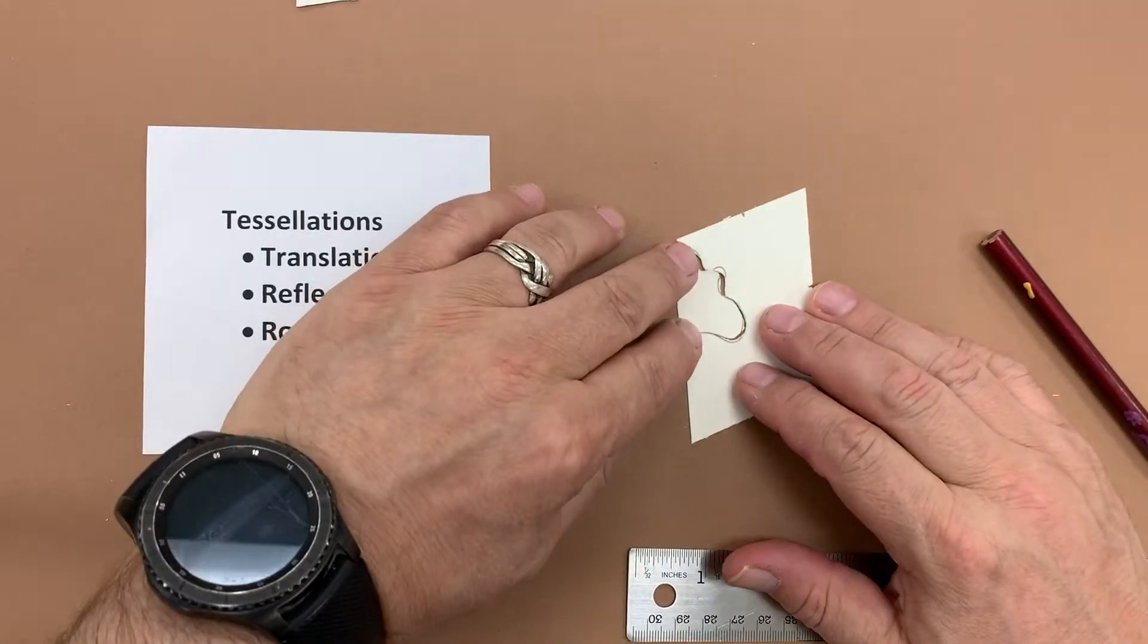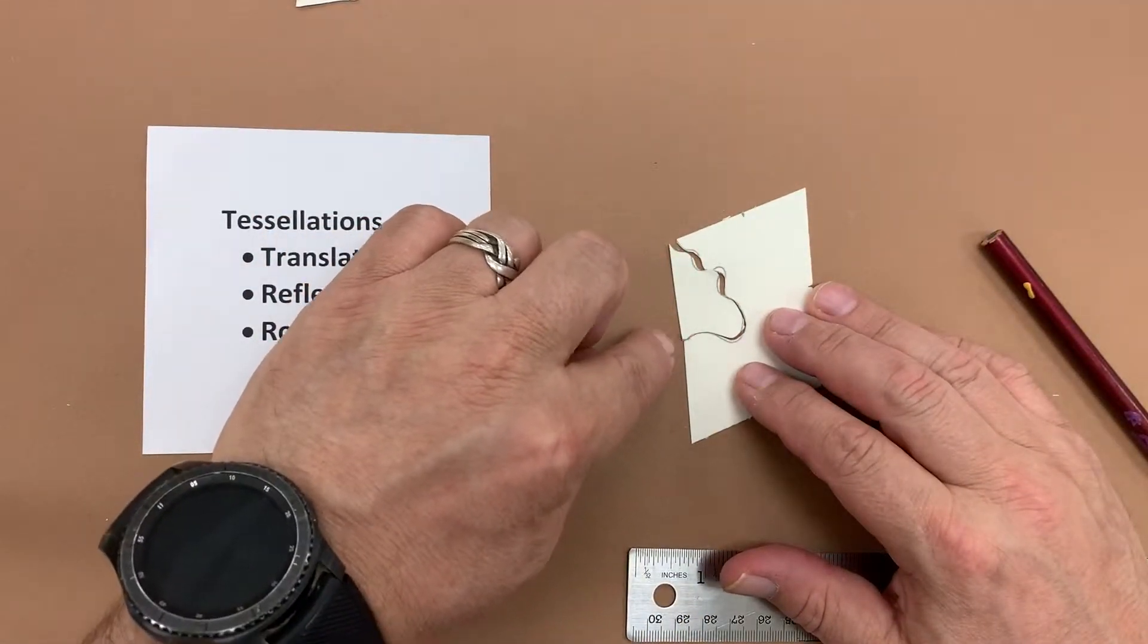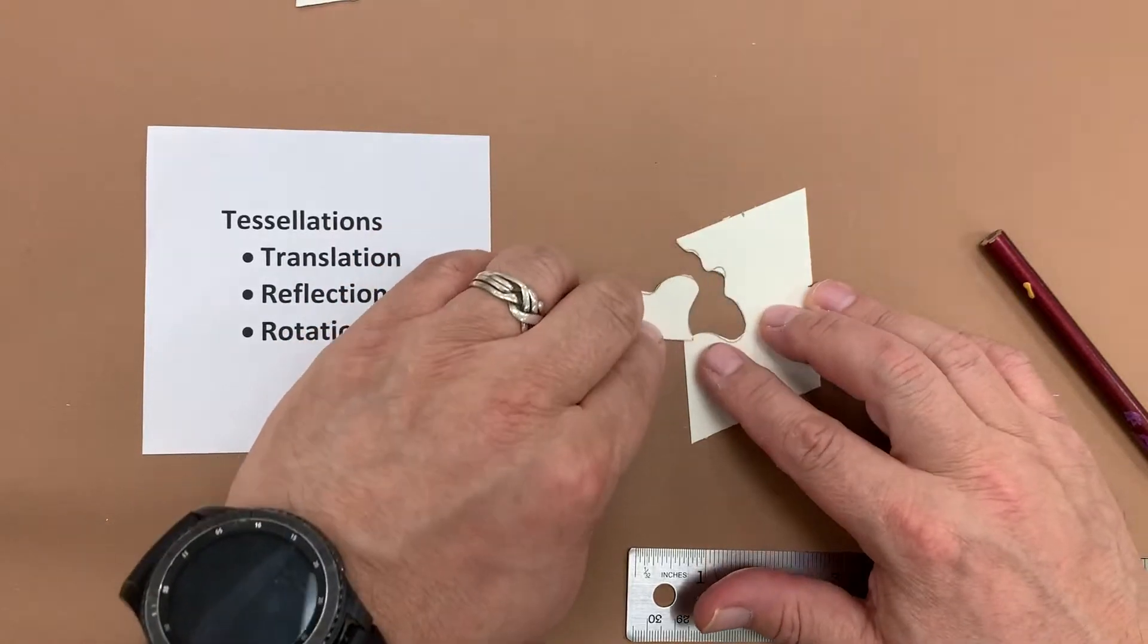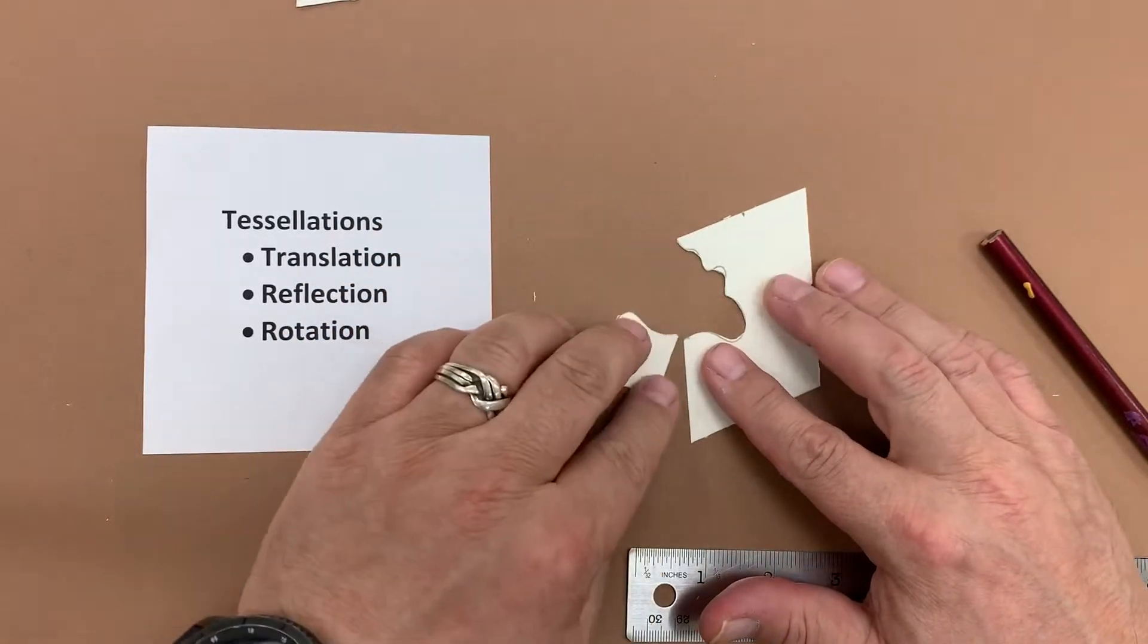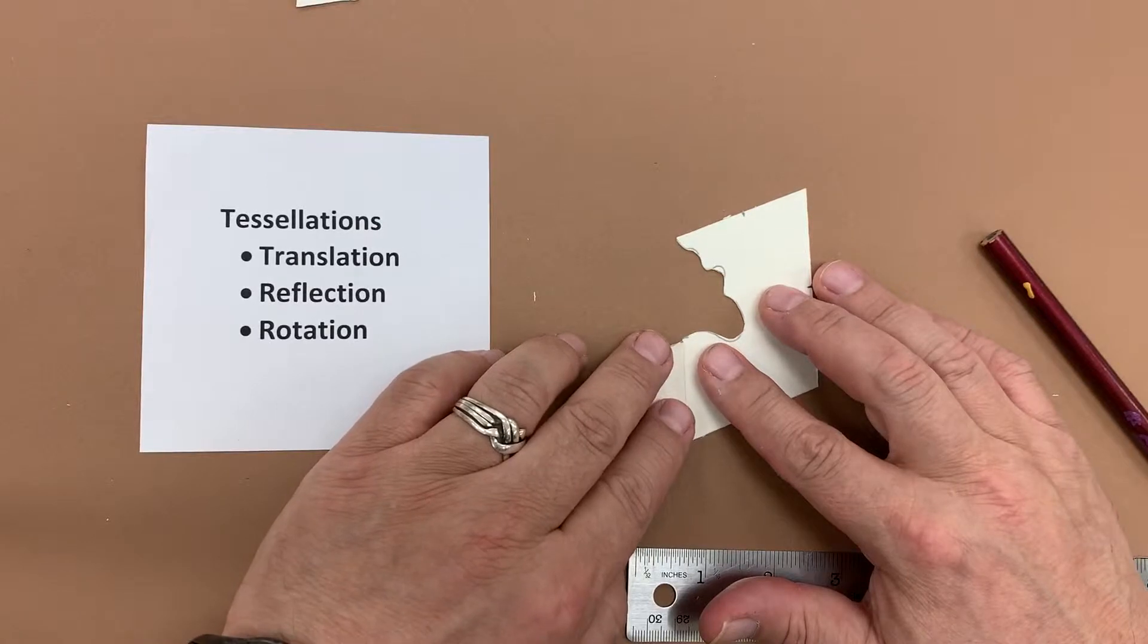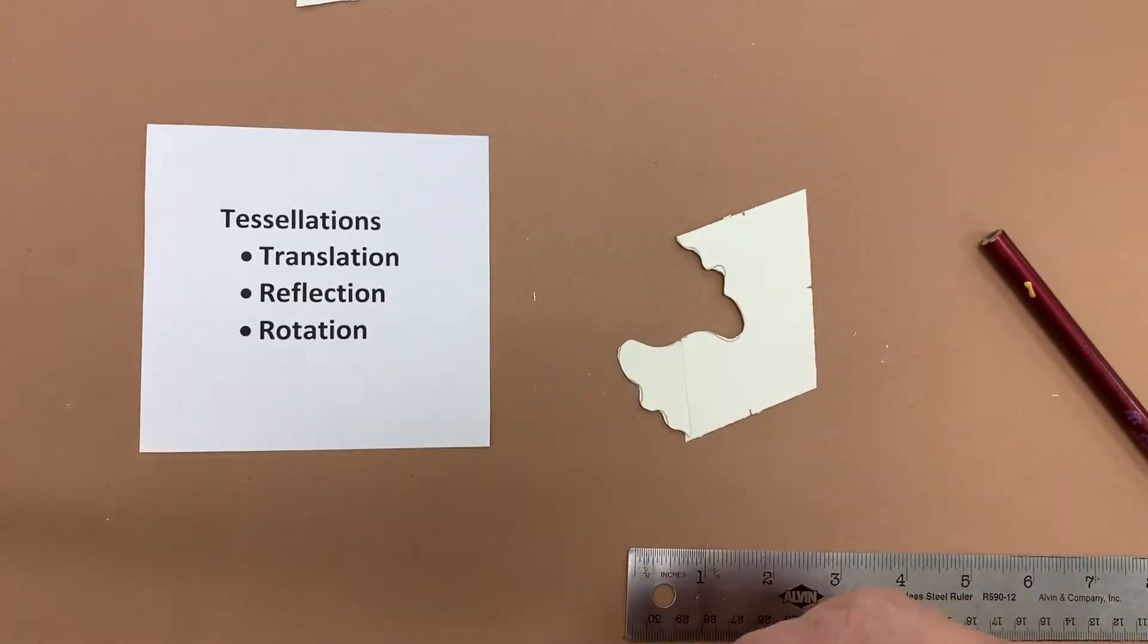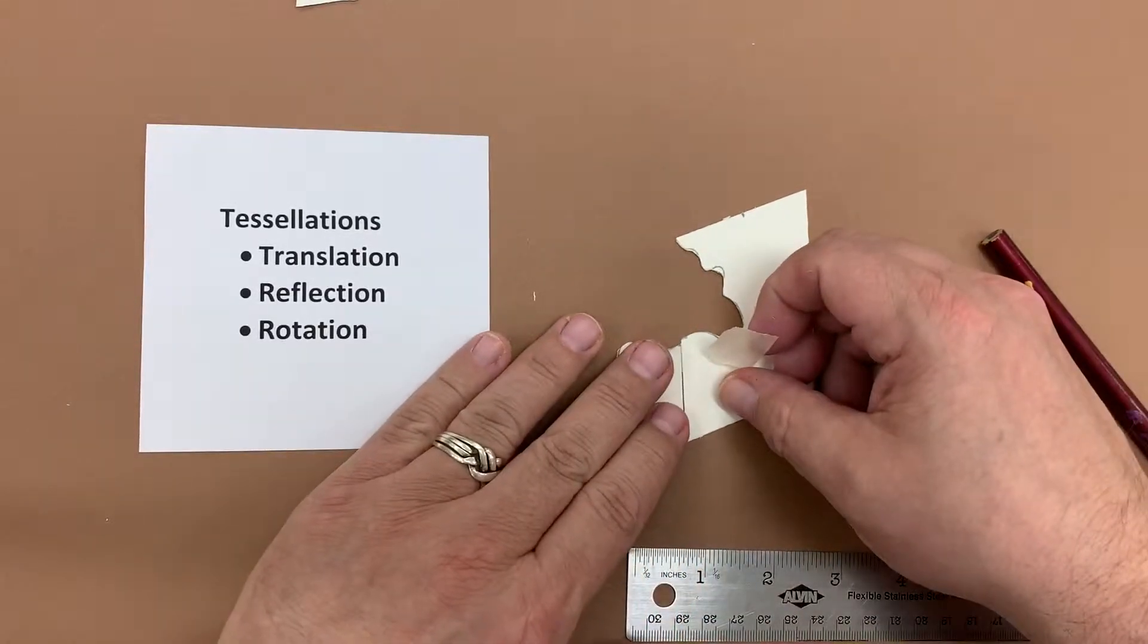So I take that piece, line it back up, and then it's going to rotate around that center mark. Just rotate it around. Then I grab a little bit of tape and tape that in there.